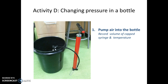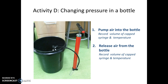After you finish pumping air into the soda bottle, disconnect the pump and record the volume of the capped syringe and the temperature of the soda bottle. Next, release air from the bottle by turning the cap on the top of the soda bottle — you'll hear the air rushing out. Record the volume of the syringe and the temperature on the soda bottle after releasing the air. That will be the last piece of data you record for Activity D.